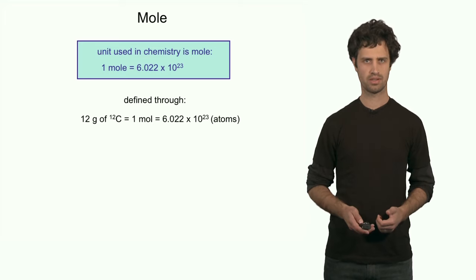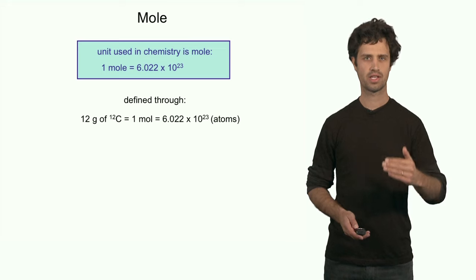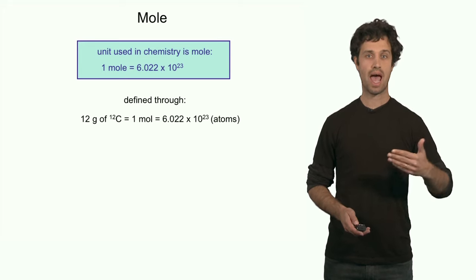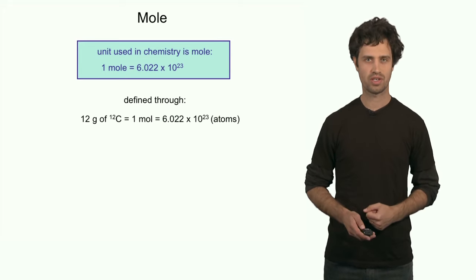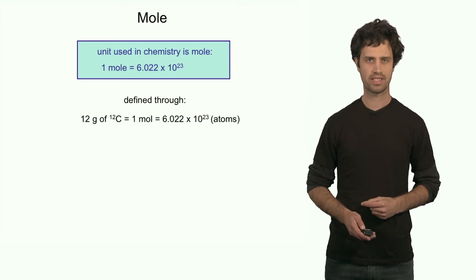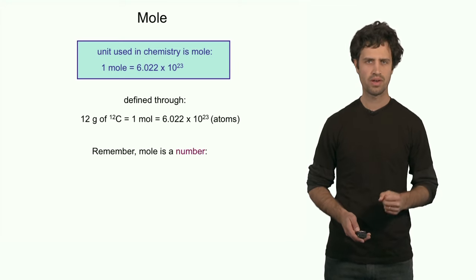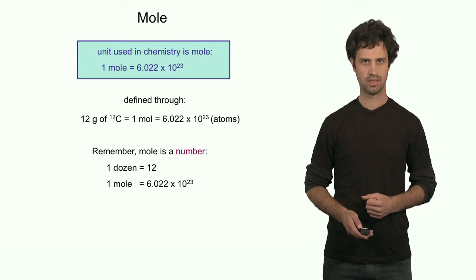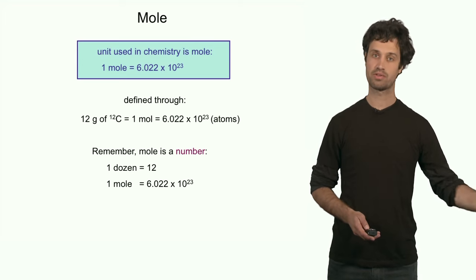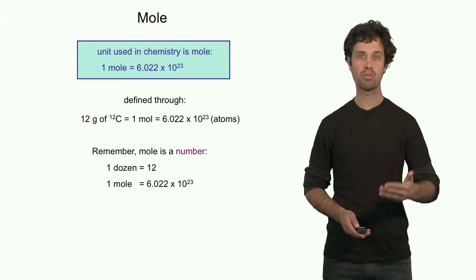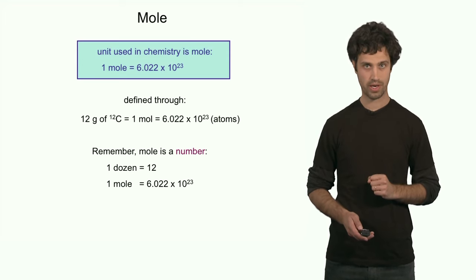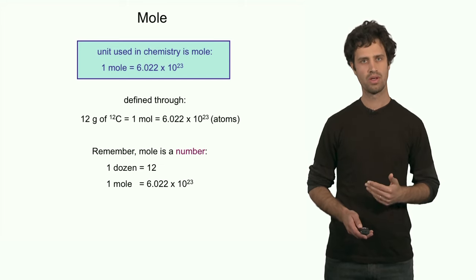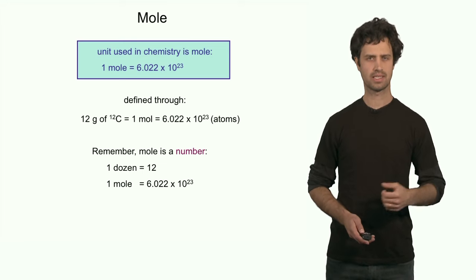This is an arbitrary definition. We have chosen, once again, carbon as our reference. One mole is defined as 12 grams of carbon-12, which happens to contain 6.022 times 10 to the 23rd atoms. Remember, the mole is a number — it is a number like a dozen is a number. One dozen means 12 items of something; one mole means 6.022 times 10 to the 23rd items of something. Even though the numbers are very different, the role they play in counting objects is exactly the same.